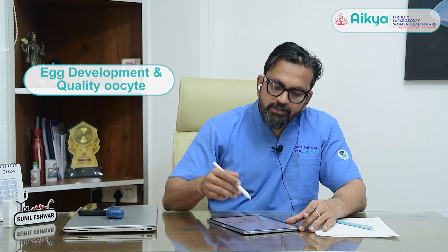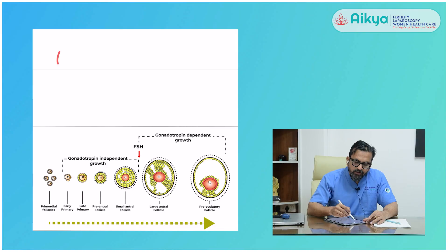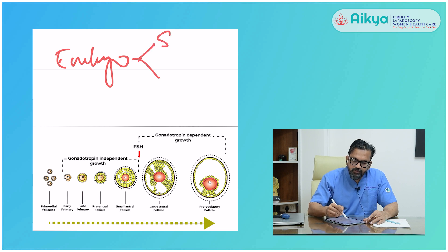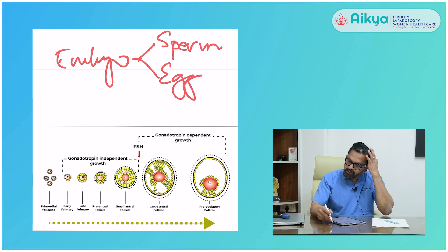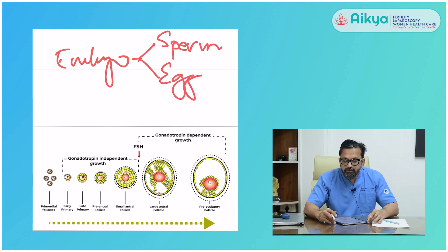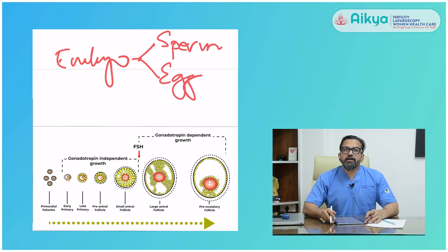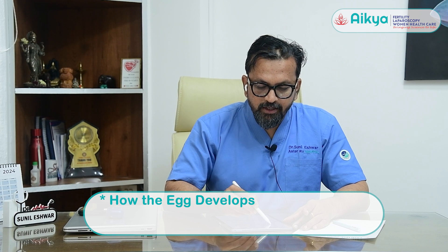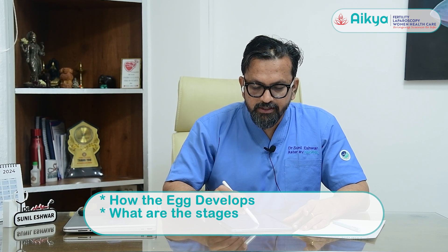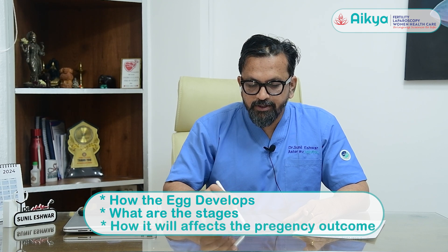As we all know, the embryo quality is totally dependent on two important things: one is the sperm and the other one is the egg, what we call the oocyte. So if the egg quality is good and the sperm quality is good, the embryo quality is also going to be good. Today we will be talking more on the egg — how the egg develops, what are the stages, and how it affects the pregnancy outcome.